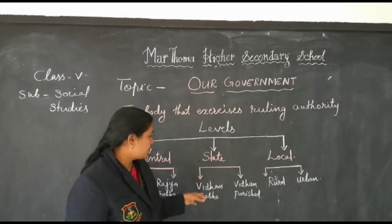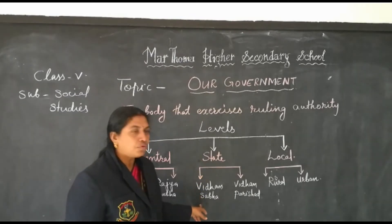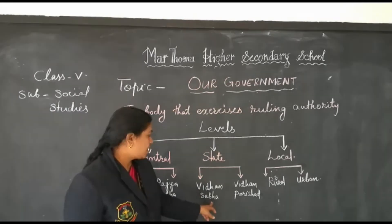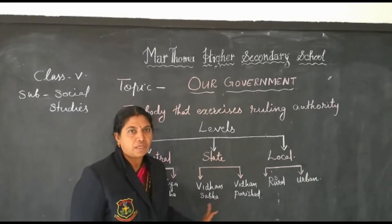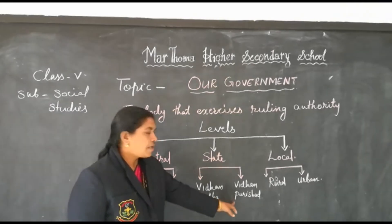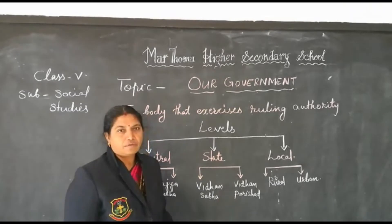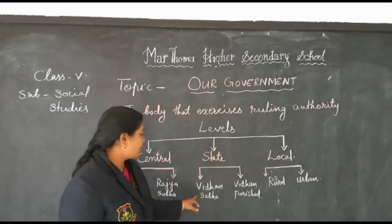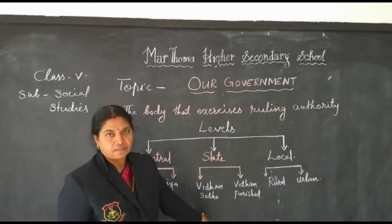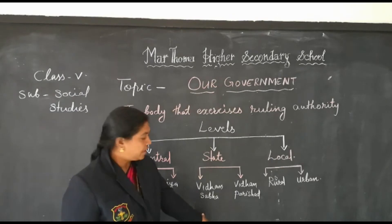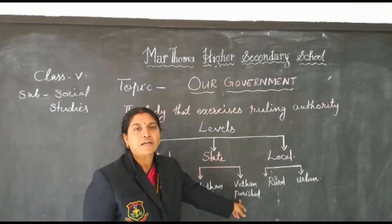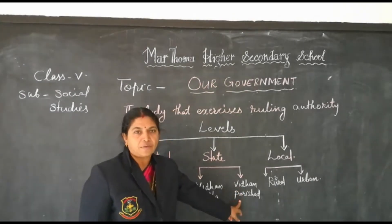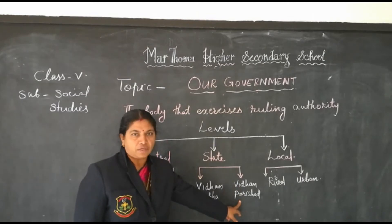The state government is divided into two levels. The first level is called the Vidhan Sabha, and the second is called the Vidhan Parishad. The members of the Vidhan Sabha are called the MLAs, that means the Member of Legislative Assembly. And the members of the Vidhan Parishad are called the MLCs, that means Member of Legislative Council.